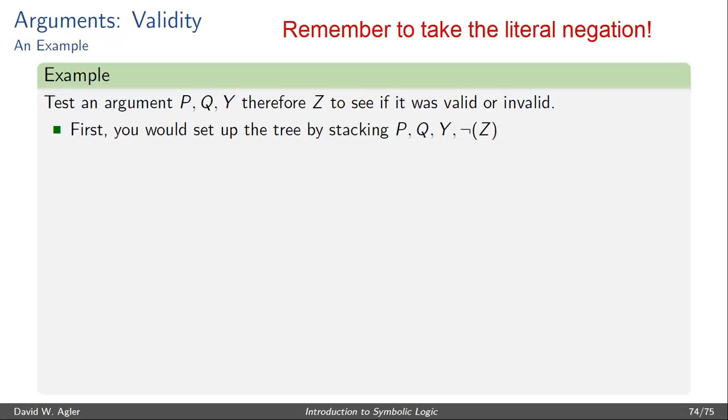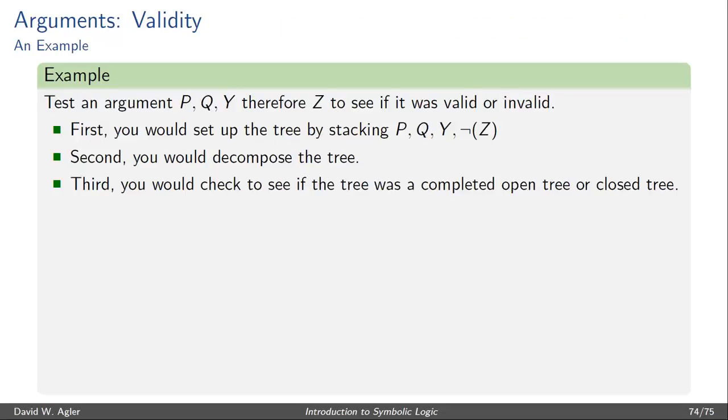First, we'd set up the tree by stacking the premises P, Q, and Y, and negating the conclusion. Then we'd decompose the tree. And third, we'd check to see if the tree was a completed open tree or closed tree.